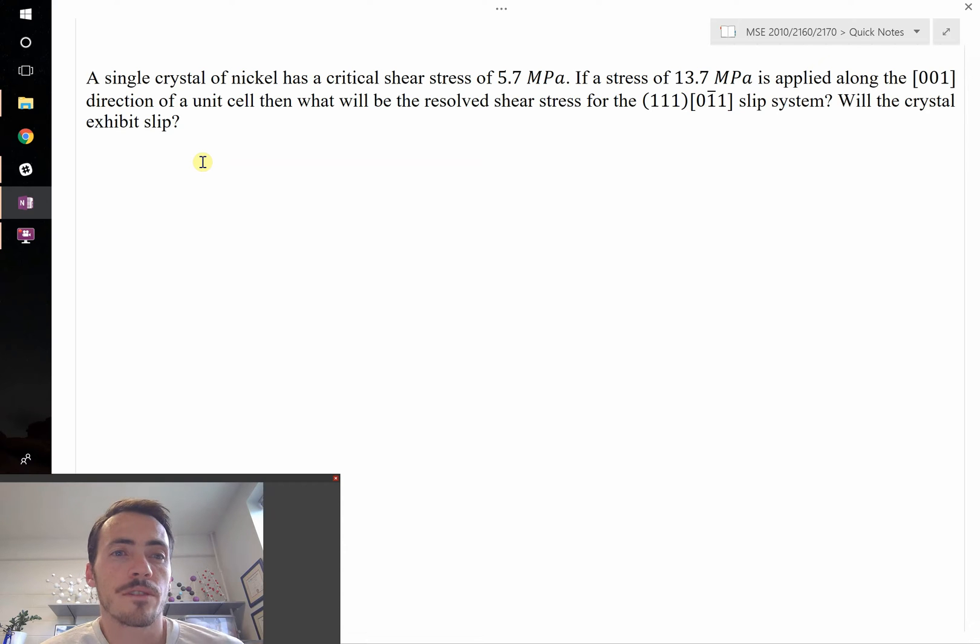Okay, this question says a single crystal of nickel has a critical shear stress of 5.7 megapascals. If a stress of 13.7 megapascals is applied along the [001] direction of a unit cell, then what will be the resolved shear stress for the (111)[0̄11] slip system? And once you have that, can you answer the question: will the crystal exhibit slip or not?